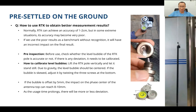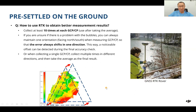As usage time increases, there may be more or less deviation, so checking the bubbles is a very important first step. During the survey work in the field, make sure you collect or survey at least 10 times at each GCP or CP. Back in the office, you can use these values to take the average and use that as the final single value.